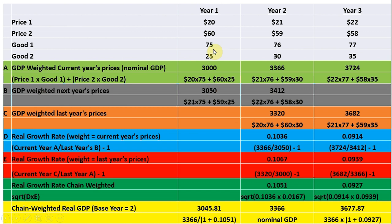Our goal is to calculate chain-weighted real GDP. Our first calculation is to calculate GDP weighted in current year's prices — that's just nominal GDP. In year one, nominal GDP is 3,000: 20 times 75 plus 60 times 25. In year two, it's 21 times 76 plus 59 times 30, giving us $3,366 for nominal GDP, with a similar calculation for year three.